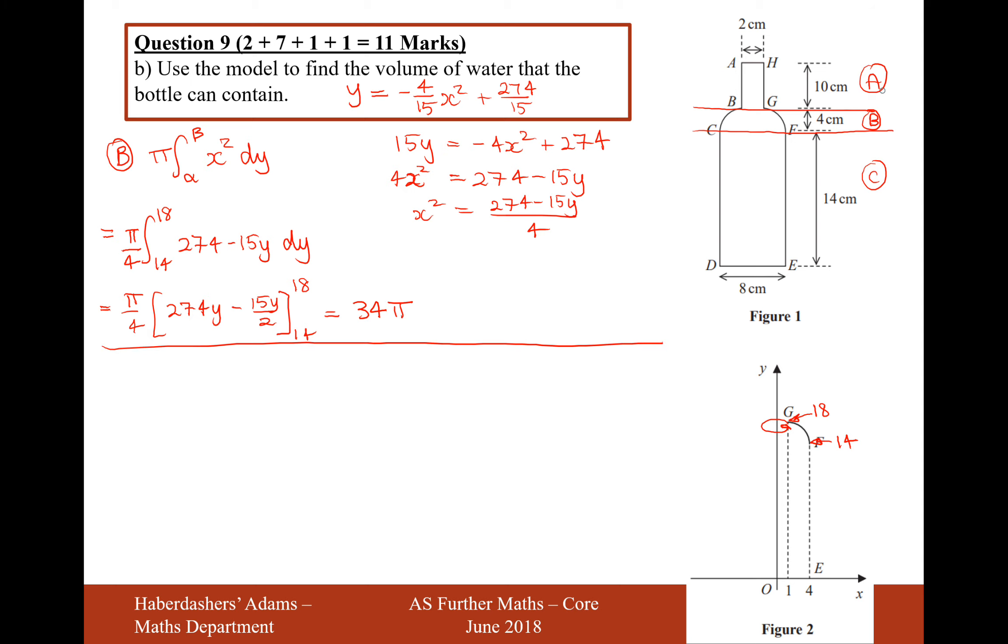So 34 pi is the answer to that integral there. Let's now move on to sections A and B now. For section A, it's going to be a small little cylinder, so it's going to be just a small neck on the bottle of wine there.